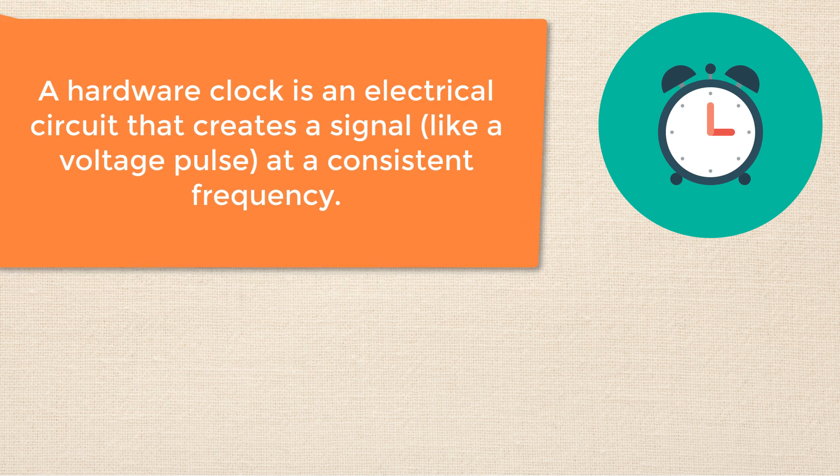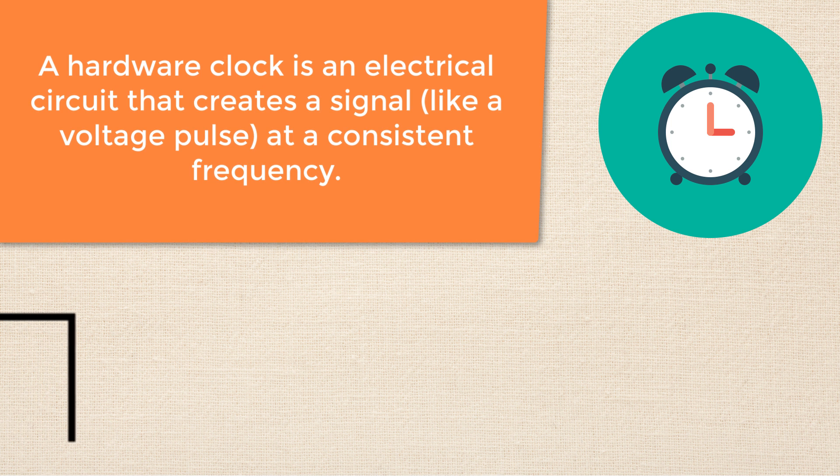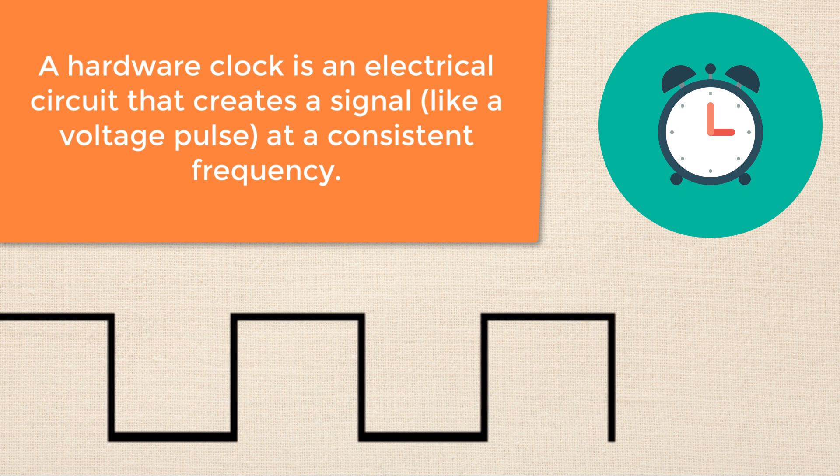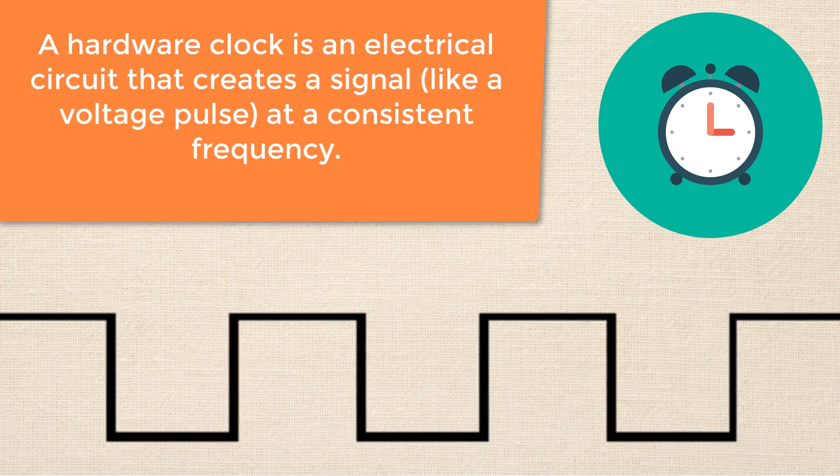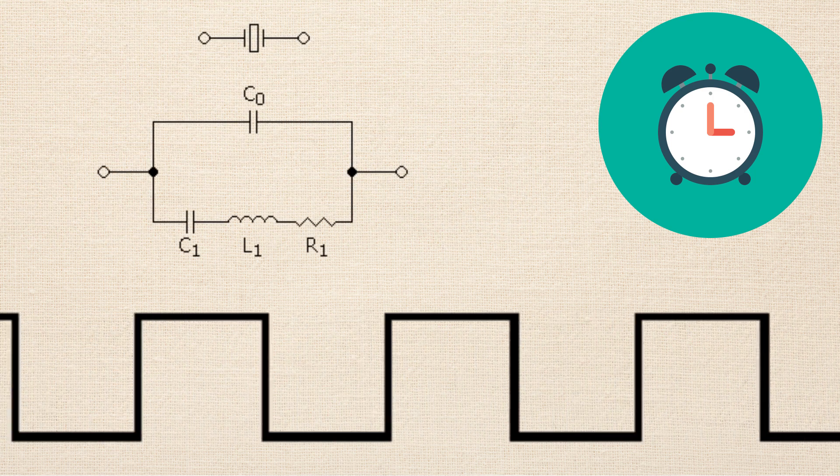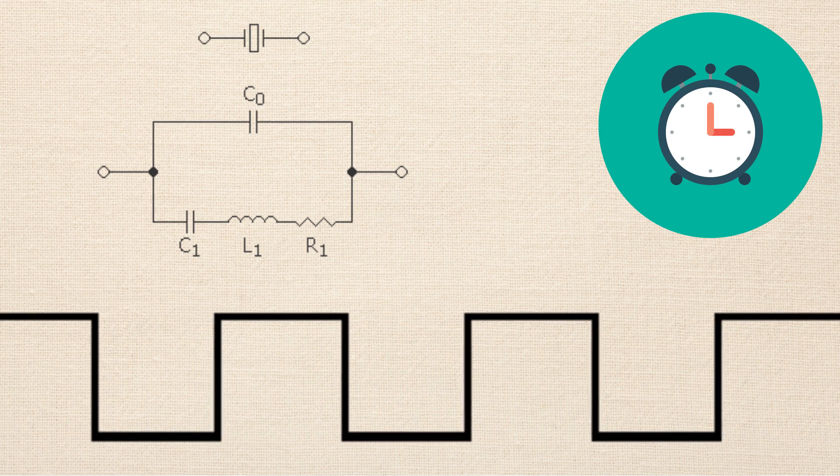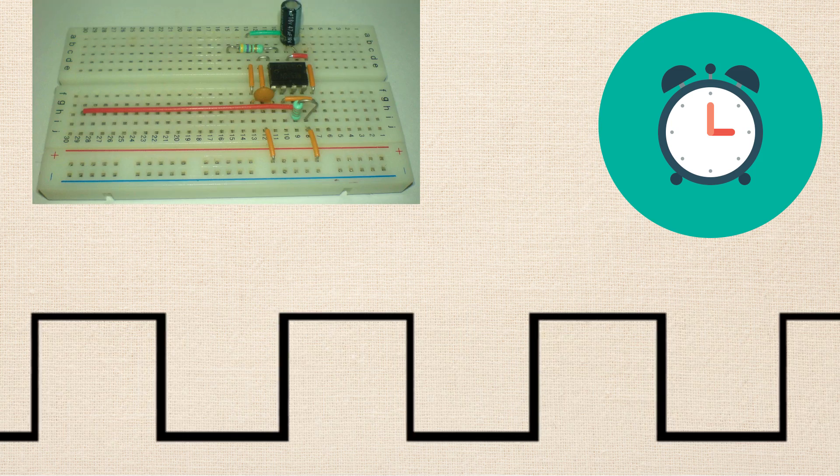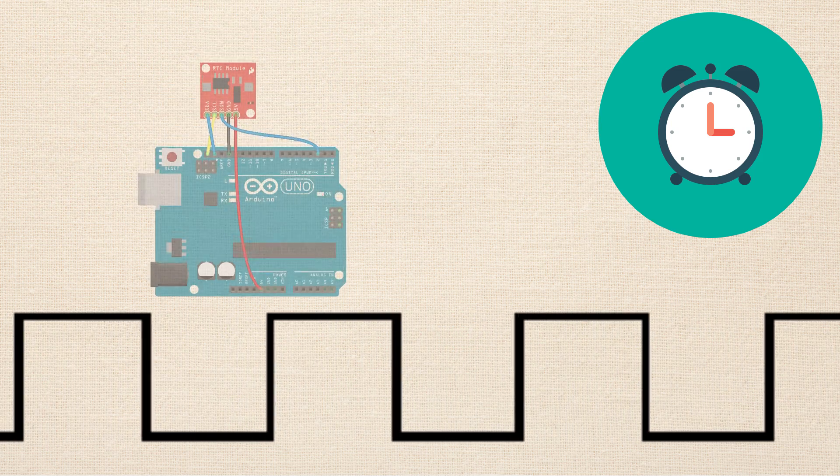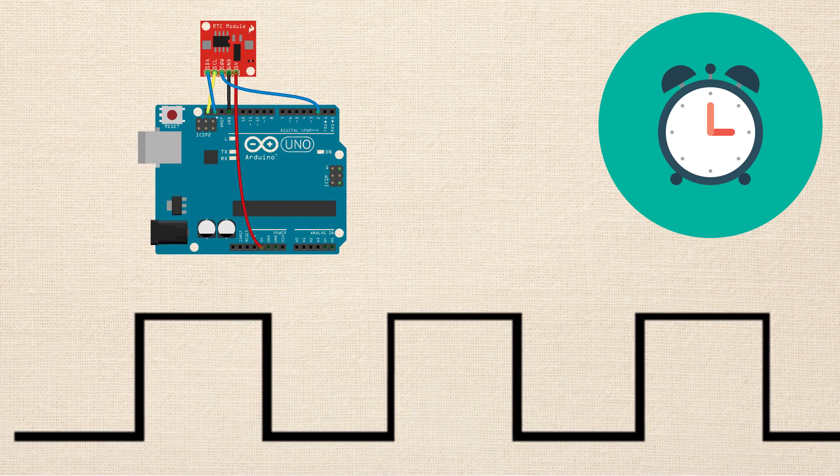Generally speaking, a hardware clock is an electrical circuit that generates a signal like a voltage pulse at a consistent frequency. There's a lot of different circuits that can generate voltage signals. Some are really precise, some you can make from discrete components that you might hook up on a breadboard, and others are built into modules that we can connect to our Arduinos.